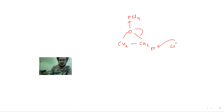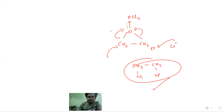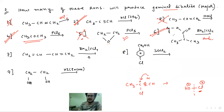Then the other one will be the same. This is not a product — geminal dihalide is not a product. It does not go directly from HX to geminal dihalide. The mechanism goes via a radical pathway, putting on one Br. So geminal dihalide is never the product from that route.